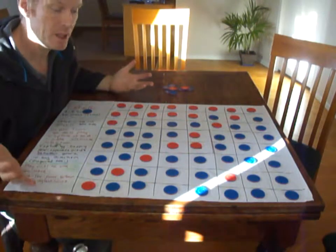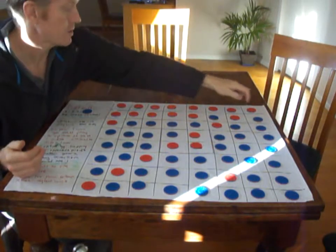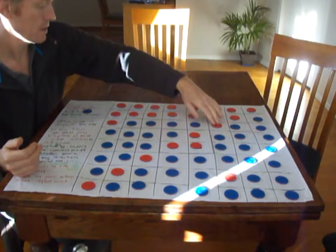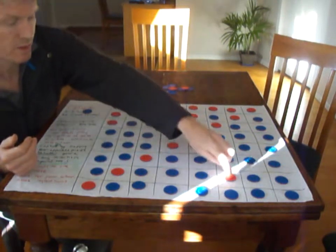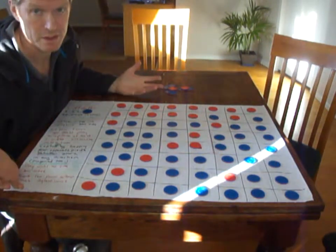Red has 23 counters, less than half of the counters. Blue has the majority. Blue wins the game.